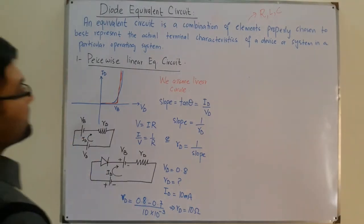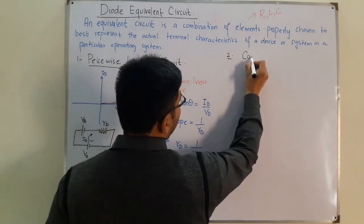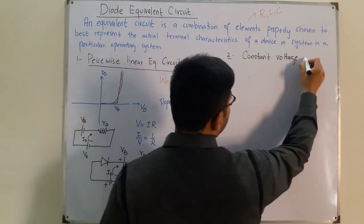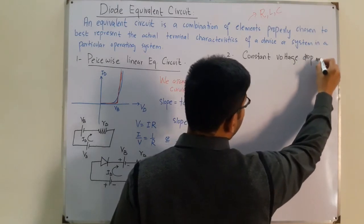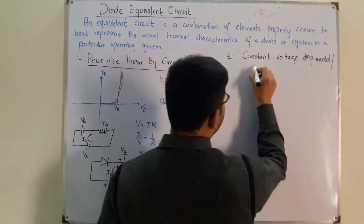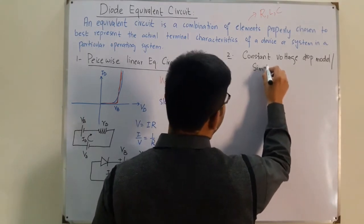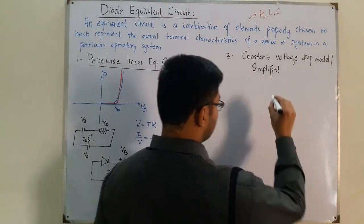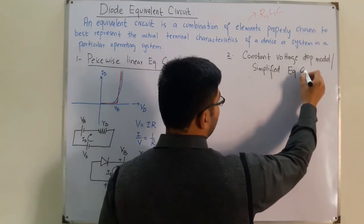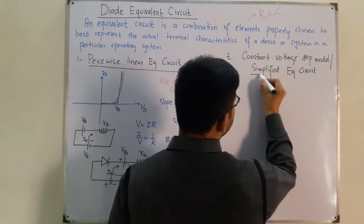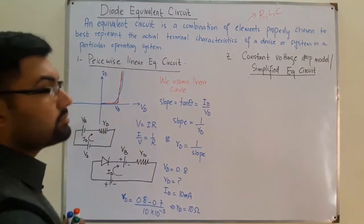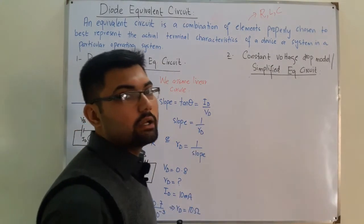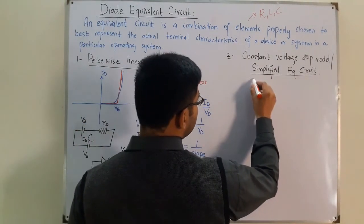The second model is the constant voltage drop model, also called the simplified equivalent circuit. In this model we make two assumptions: first, the curve is linear, and second, RD equals 0.